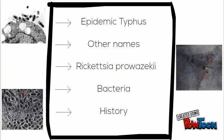The first description of the disease was in 1083 in Italy. Before a treatment was found in World War II, Epidemic Typhus would have occurred after wars, famines, or natural disasters.